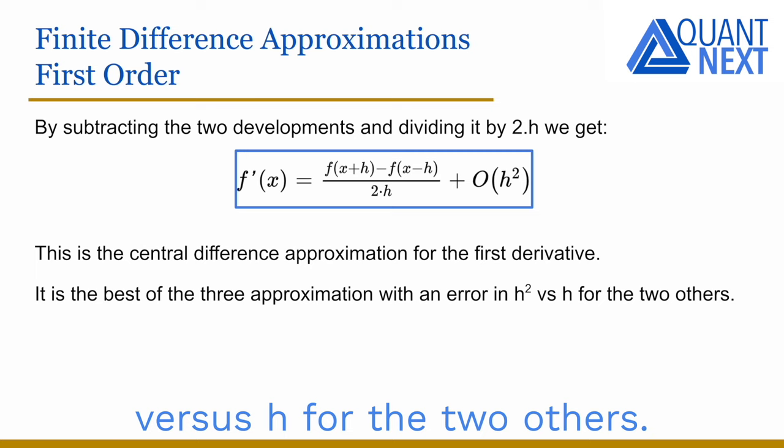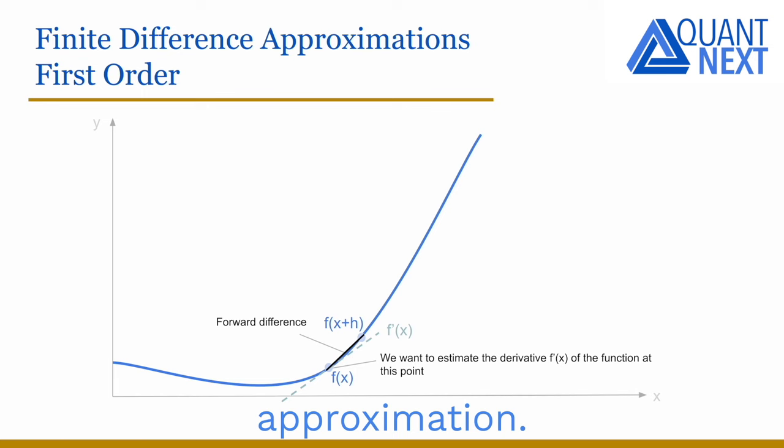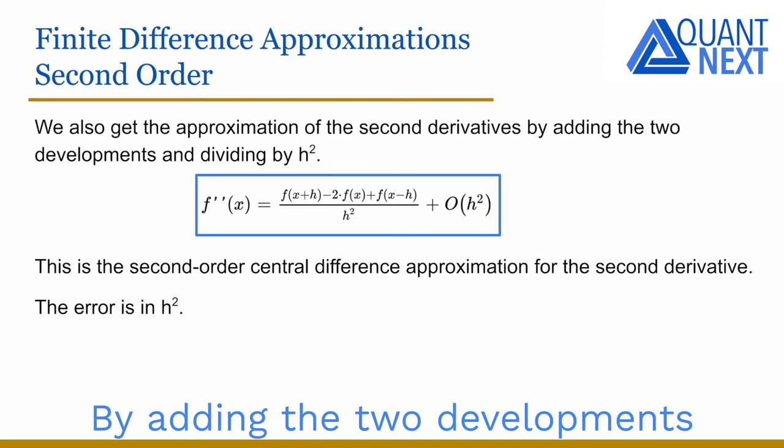Here is an illustration of the first order approximations. We want to estimate the derivative of the function at this point. This is the forward difference approximation, this is the backward difference approximation, and we easily see that the central difference gives the best approximation of the three.